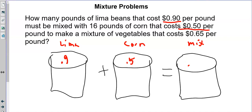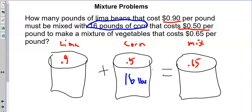We know there are 16 pounds of corn. We don't know how much lima beans we have, so let X equal the number of pounds of lima beans. That means the total mixture contains X plus 16 pounds.